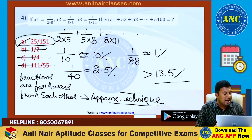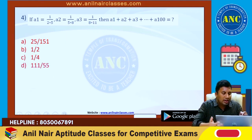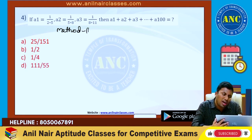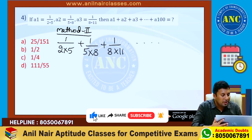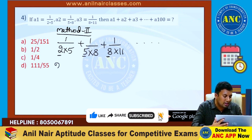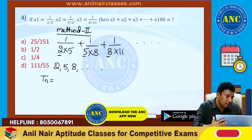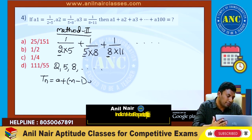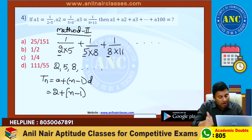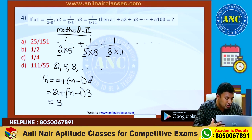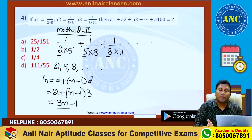Answer for this question is 25 by 151. Let me verify this using method 2. These are easy if you know all the concepts. 1 by 2 into 5, next is 1 by 5 into 8, third is 1 by 8 into 11 and so on. The first numerical values in the denominator series are 2, 5, 8 and so on. So TN is nothing but A plus N minus 1 into D: 2 plus N minus 1 into 3, which is nothing but 3N minus 1.